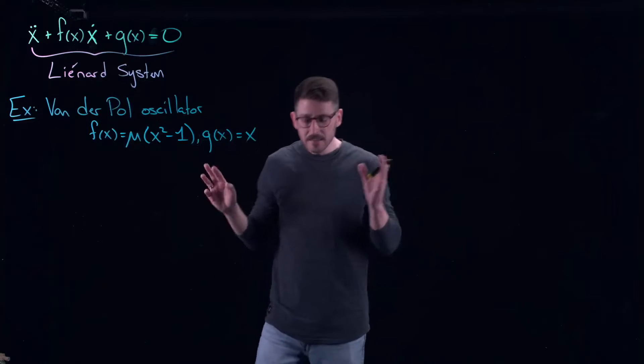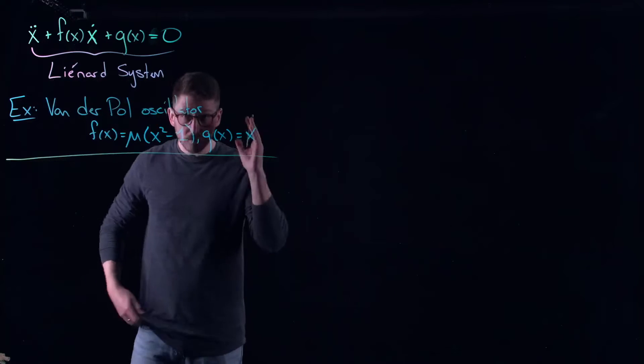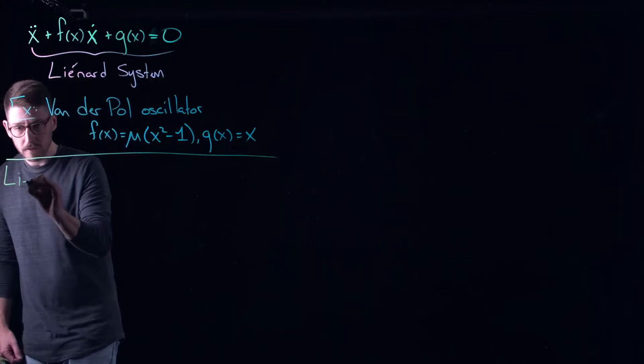And the beautiful part is you can kind of pick different forms for f of x and g of x and you can build electrical circuits according to these things. Now again that's a little bit outside of my own area of expertise so I can't help you build it, but if you could build it please let me know. I would love to see it. Okay so let's talk about Liénard's theorem.